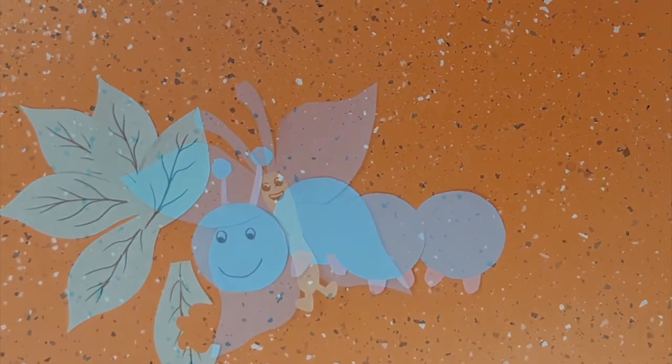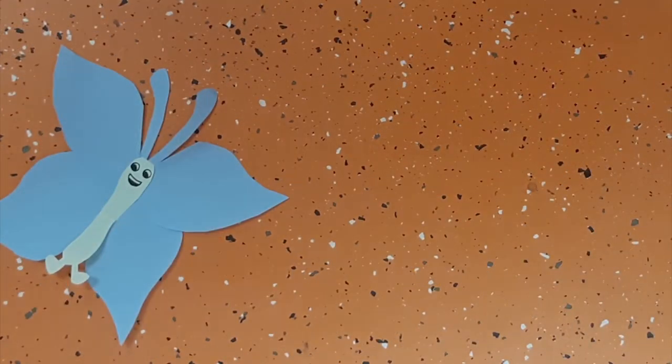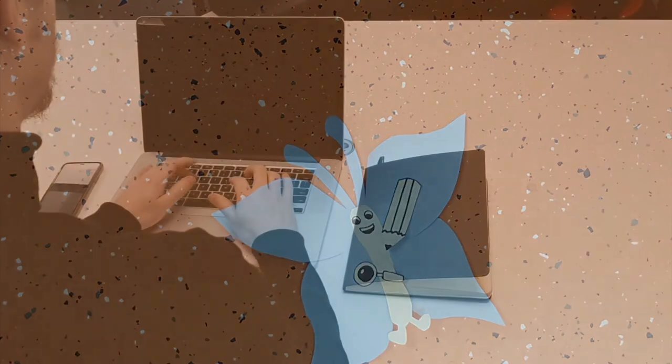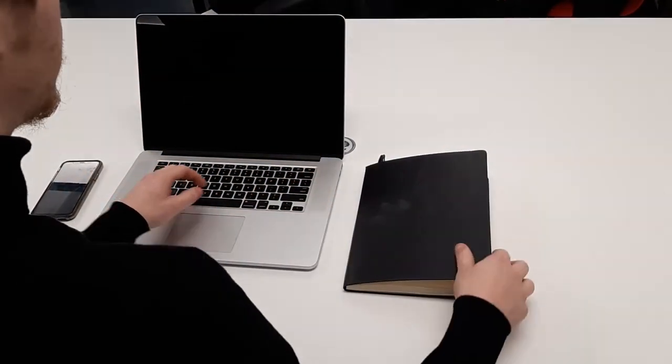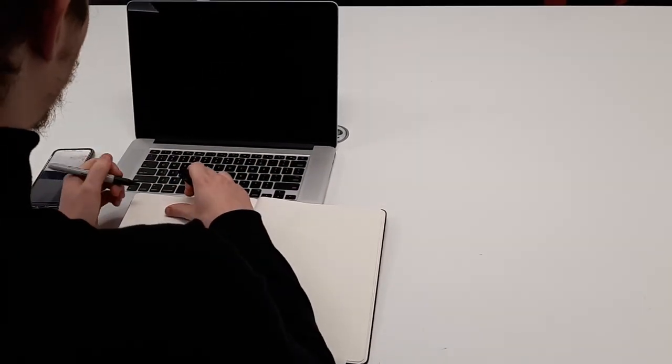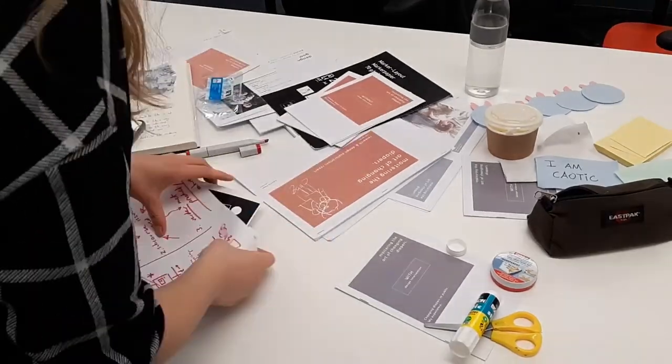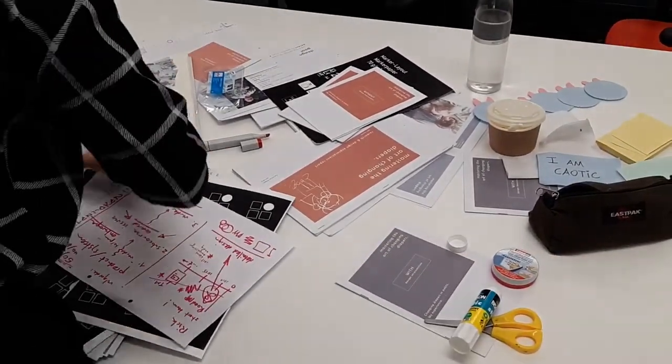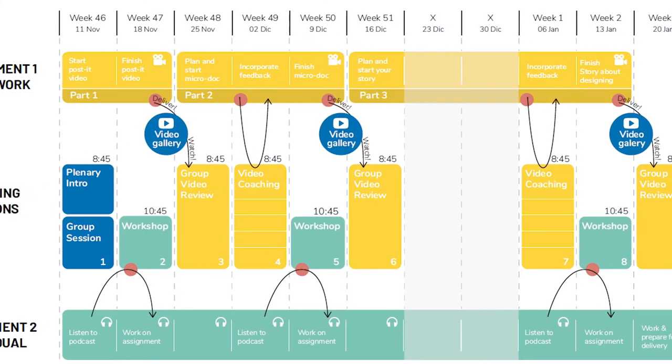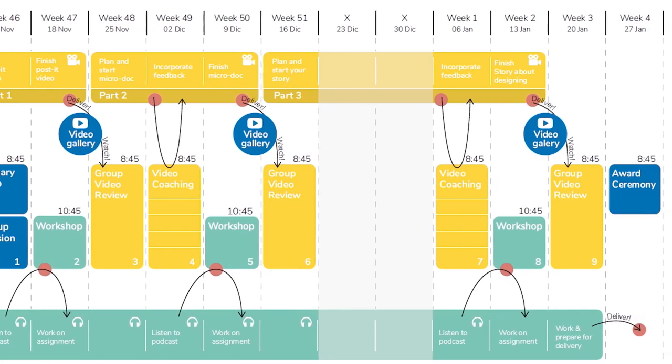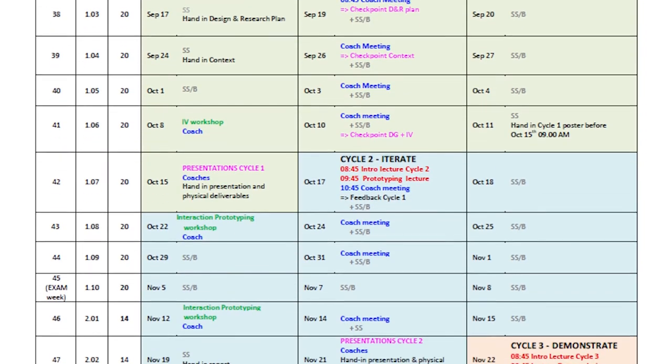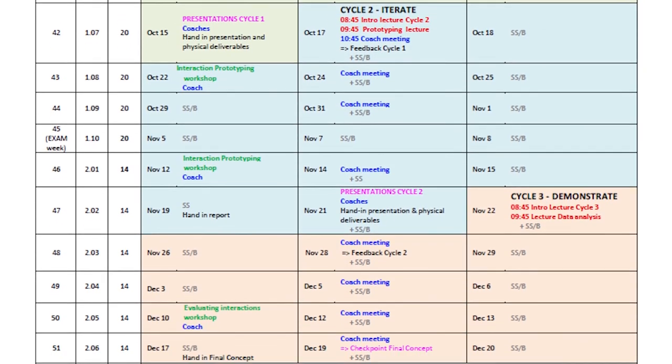Besides that, every designer has internal factors that influence their decision making. Each designer has his or her own way of designing based on unique characteristics. Then there are also external and context-related influences. The time available and type of project, for example, can determine what kind of approach is most appropriate.